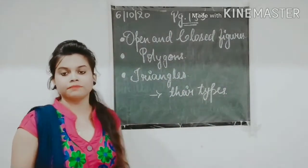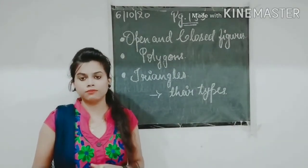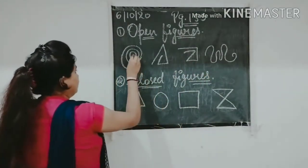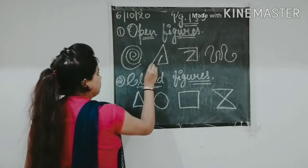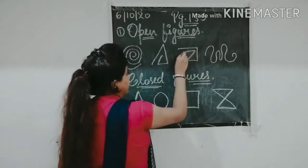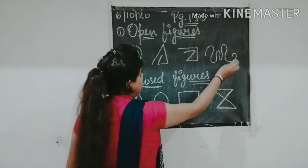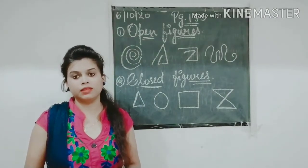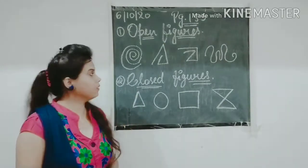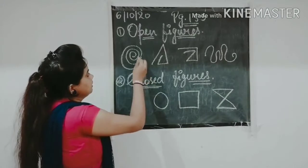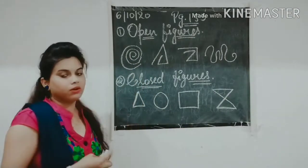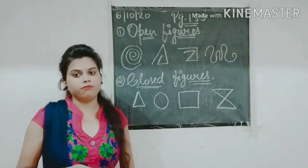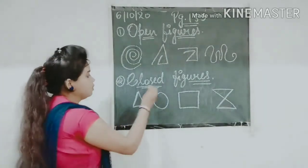First, we will start with open and closed figures. An open figure is one that begins and ends at different points — it does not begin and end at the same point. For example, these figures each begin at one point and end at a different point, so they are called open figures.